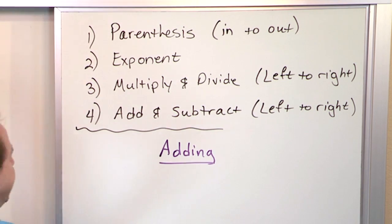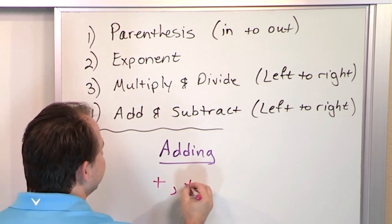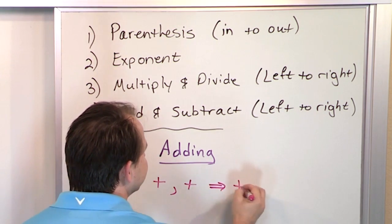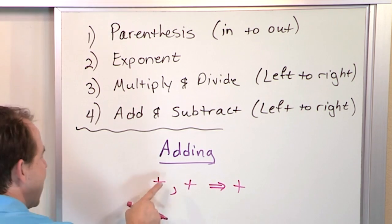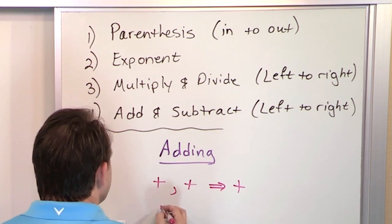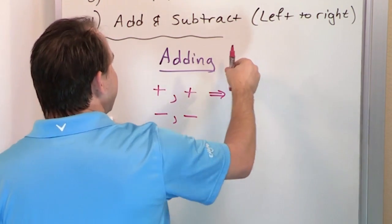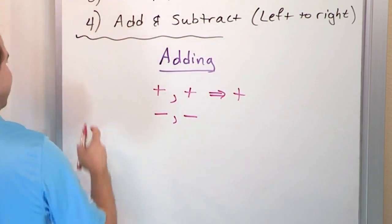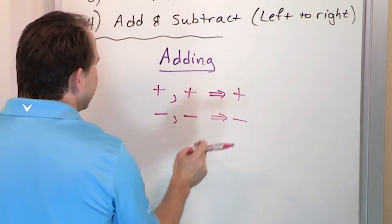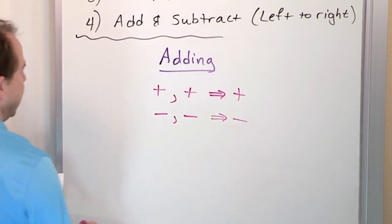When you add a positive number to another positive number, like three plus four, you always get a positive number — everybody knows that. So positive plus positive always gives you a positive. When you add a negative to another negative number, you're already negative and then you add more negative to it, and you end up with something that's always negative. So negative plus negative always gives you a negative.